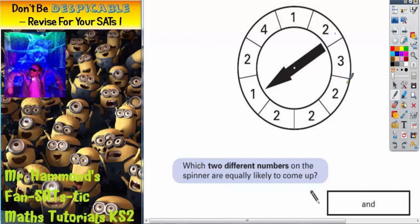Well, we've got four possible numbers that can come up: the number 1, number 2, number 3, or the number 4.